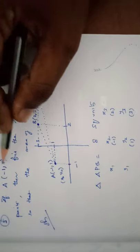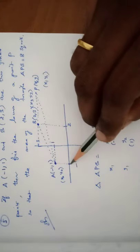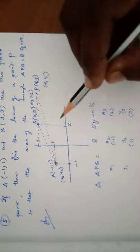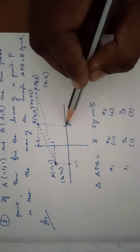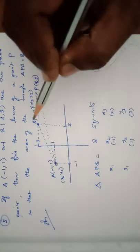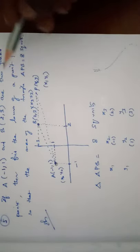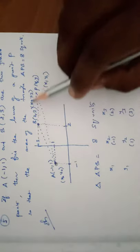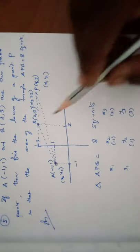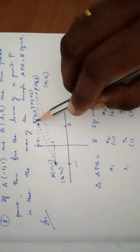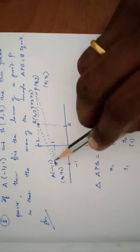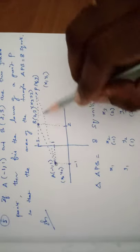First, we identify point A as (-1, 1) and point B as (2, 3). These are the two fixed points. Point P is connected to both A and B to form a triangle APB whose area equals 8 square units.